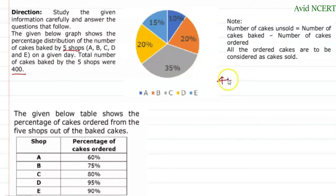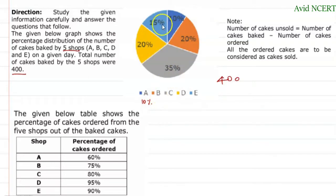Out of 400 cakes: shop A (dark blue) made 10% of cakes, B made 20%, C made 35%, D made 20%, and E made 15%. The given table shows the percentage of cakes ordered from the five shops out of the baked cakes. For example, shop A made 10% of the 400 cakes.